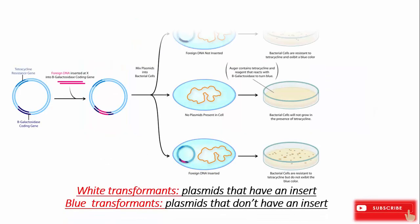Here we have a vector containing the beta-galactosidase coding gene and a tetracycline resistance gene. We will insert our foreign DNA into the lacZ gene. After transformation into bacterial cells, there will be three possible cases.